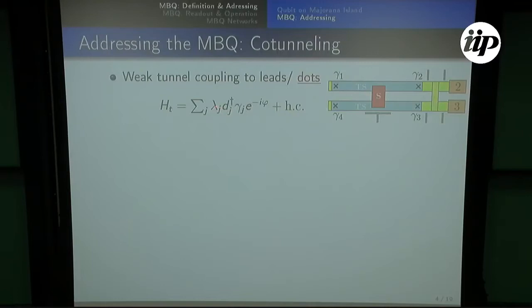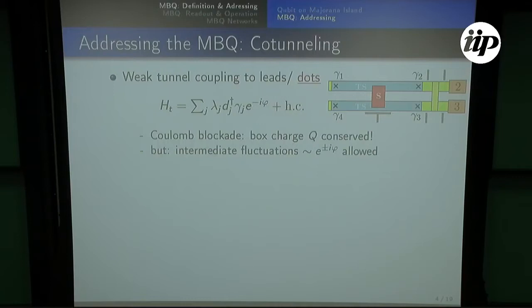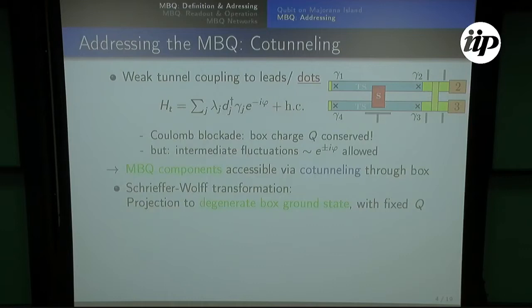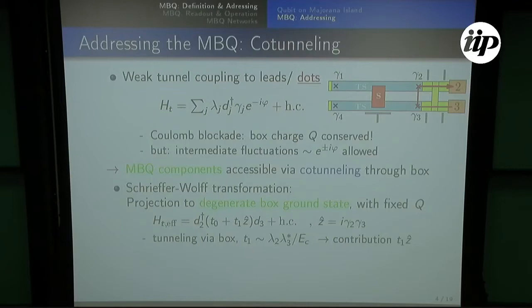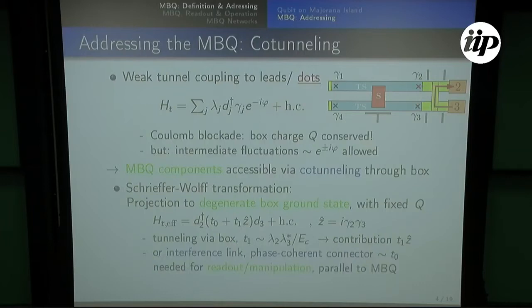What you basically have is tunneling between leads or dots and tunneling onto the island by putting or taking one charge. We have some coupling lambda two to lead number two, and you remove one charge from the island. But now we have Coulomb blockade, so in general the box charge should be conserved. Nevertheless, these intermediate virtual fluctuations are allowed: I can have some tunneling in, and trade it off by tunneling out somewhere else. So the states of these box qubit components should be accessible by co-tunneling through the box, and one can do the Schrieffer-Wolff transformation. We project to a fixed charge state on the island; the ground state of this island is still degenerate in the Majorana sector.